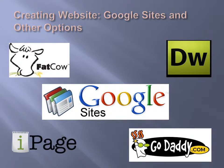We decided to use Google Sites as our host site, but here are a few other programs that are popular for creating websites. They include Dreamweaver, Fat Cow, GoDaddy, and iPage. Dreamweaver is a more professional software program that can be bought and downloaded, but there are plenty of other cheaper alternatives, such as the ones listed previously.